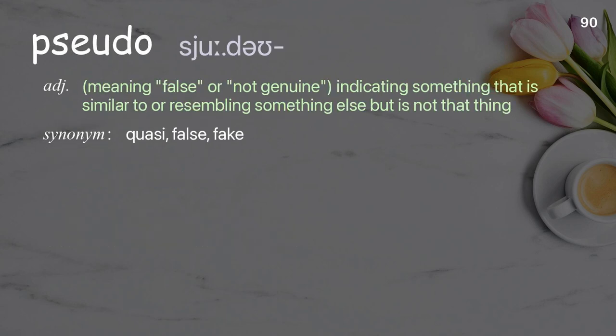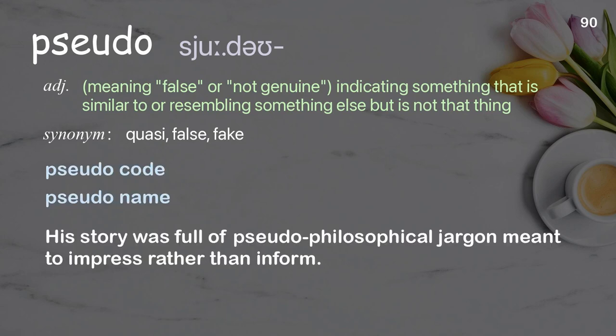Pseudo: meaning false or not genuine; indicating something that is similar to or resembling something else but is not that thing. Examples: pseudocode, pseudoname. His story was full of pseudophilosophical jargon meant to impress rather than inform.